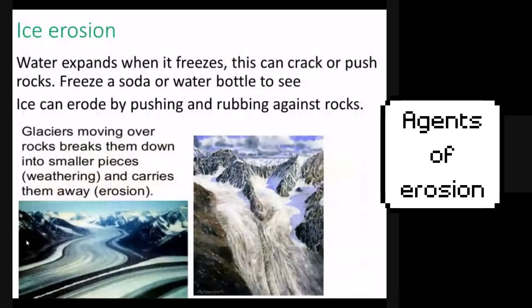Ice can erode in two different ways. The first is called freeze-thaw cycles: water gets into cracks in rocks or soil, it freezes and moves the soil a little bit downhill, then thaws out again until the next night. That's a pretty slow process since it only happens once per day. Glaciers are another type of ice erosion and can move a whole lot more soil. Anytime you see a glacier with dark streaks inside, that's the glacier picking up sediment and rocks and moving them downhill.